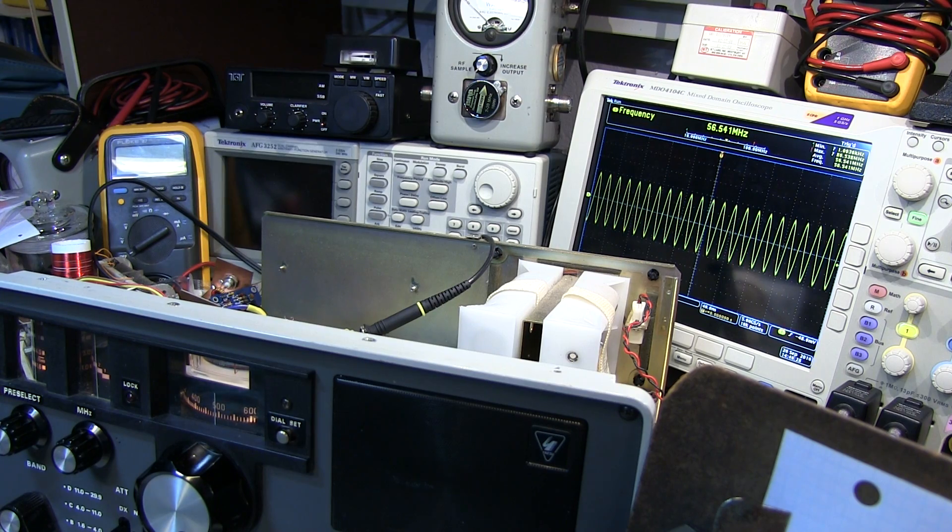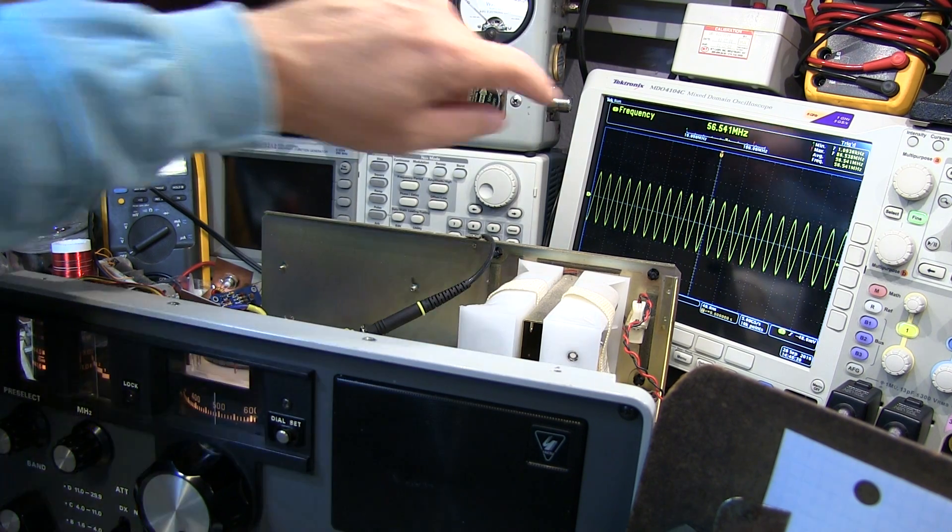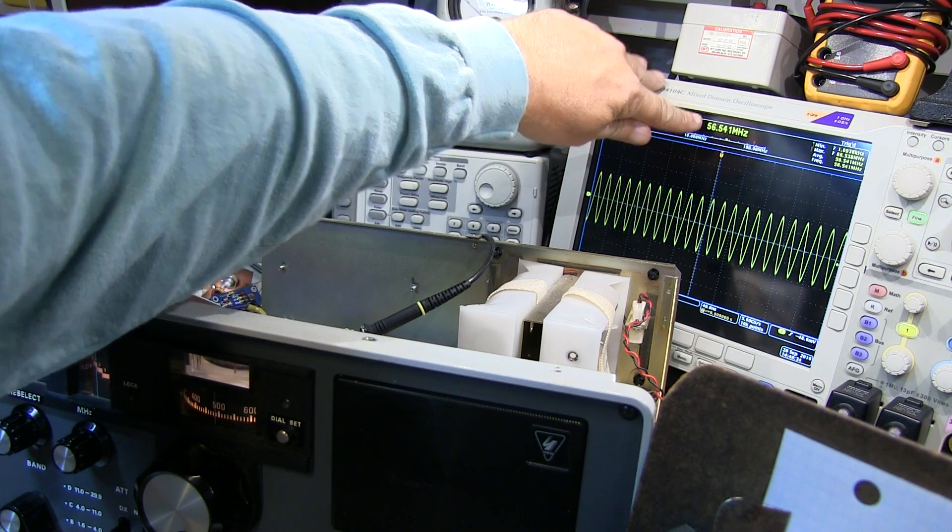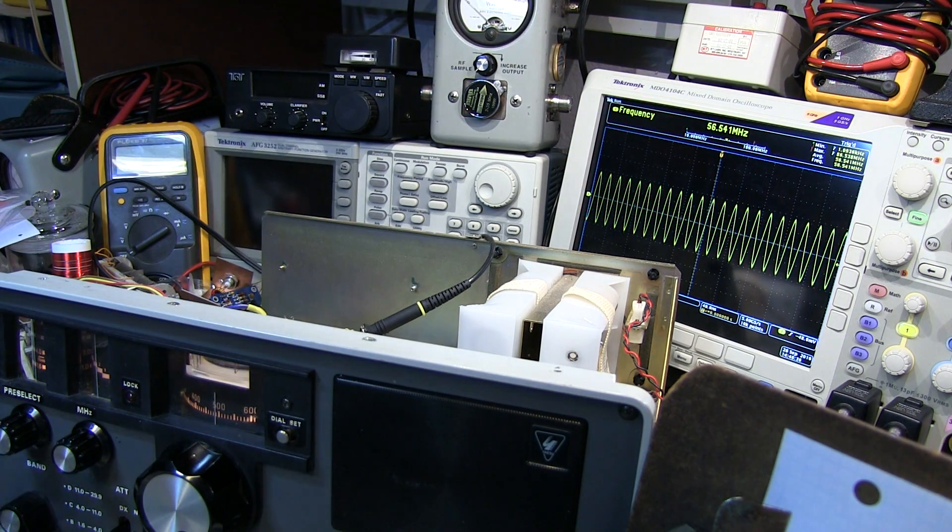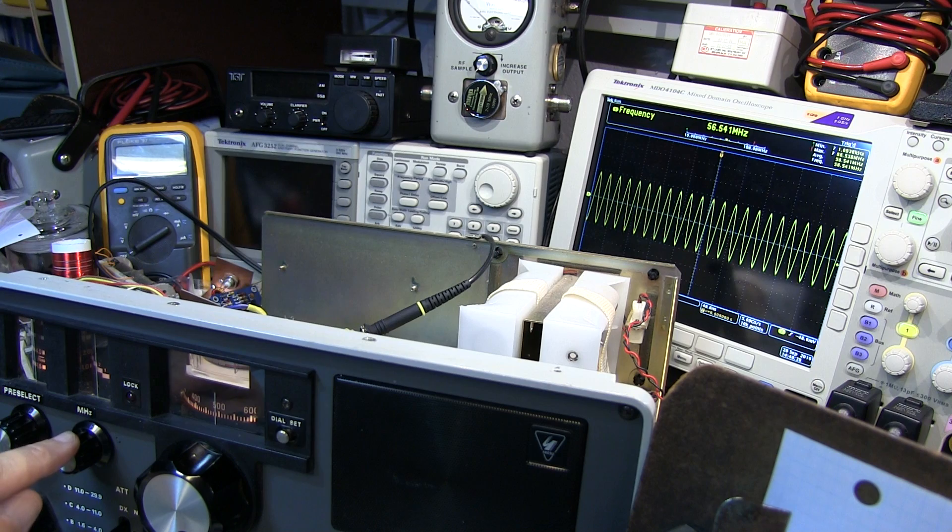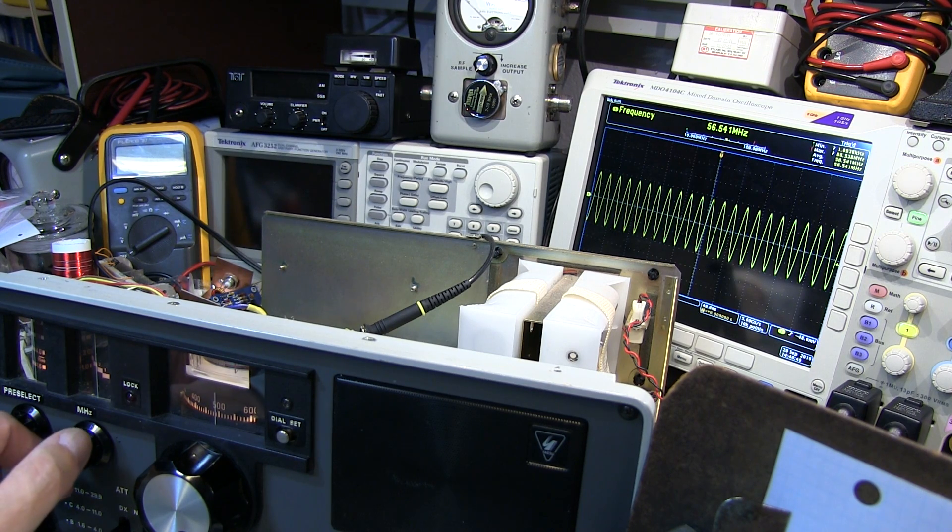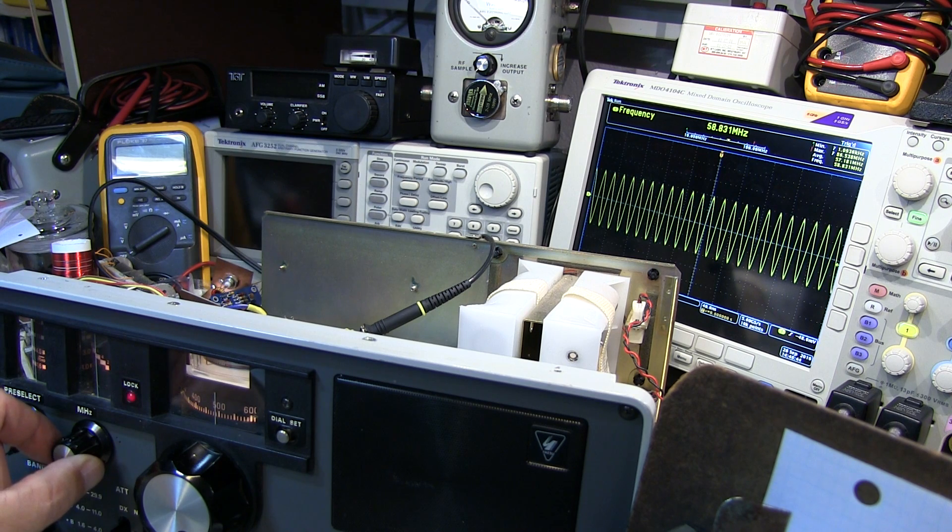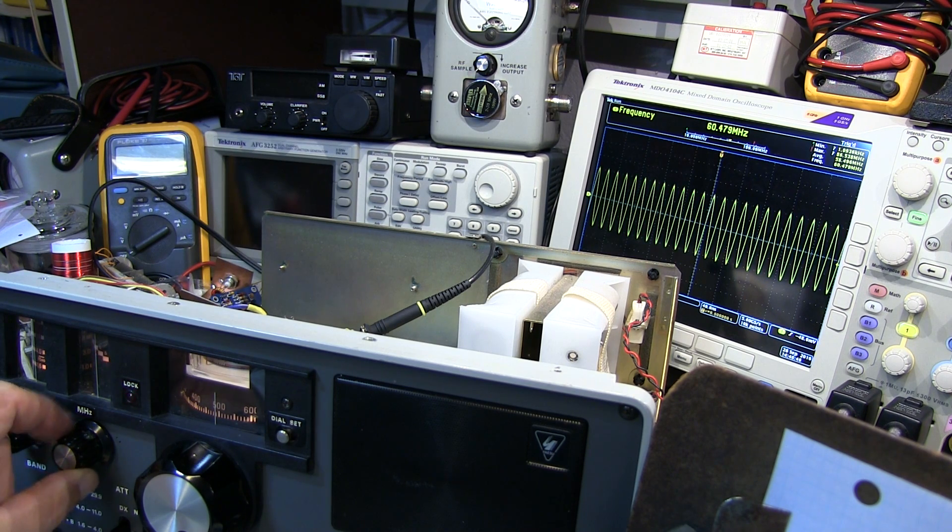So here is our first local oscillator. You might be able to read on the scope here the frequency counter measurement currently showing 56.54 MHz. And this is adjusted using the MHz dial on the FRG7.